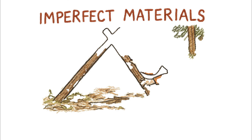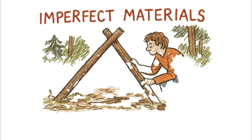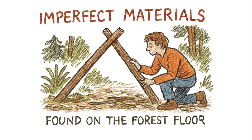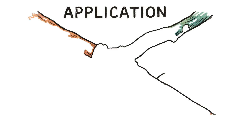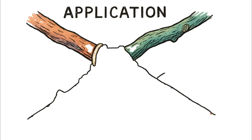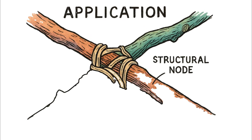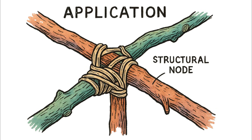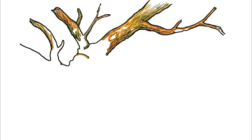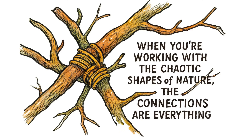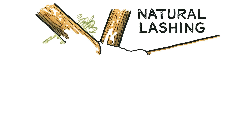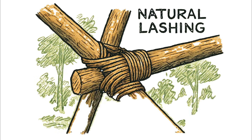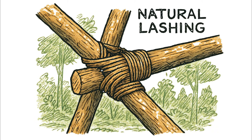Once you grasp how triangles govern structural reality, you must learn how to apply those abstract principles to the messy, imperfect materials you actually find on the forest floor. This starts by treating every lashing as a structural node, ensuring your irregular branches are locked tight enough to prevent rotation and maintain the geometry of the frame. Think of these lashings — whether from cordage or stripped roots — as the wilderness equivalent of an engineer's gusset plates or high-tensile bolts.